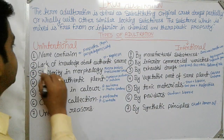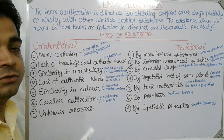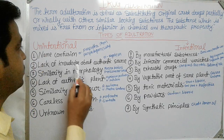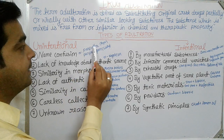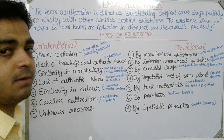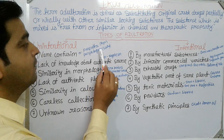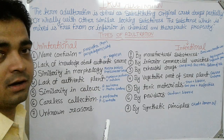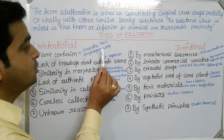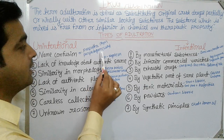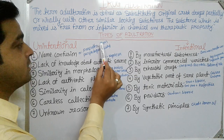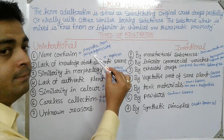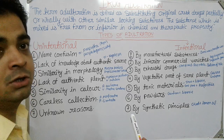The first type of unintentional adulteration is name confusion — confusion in the botanical or vernacular name of the drug. For example, Parpata used in the Ayurvedic system of medicine and Parpata gum used in the Siddha system of medicine have almost similar pronunciation, so they get confused and are used interchangeably.